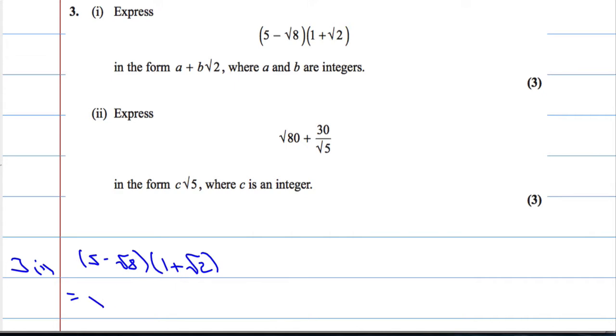So 5 times 1 is 5, 5 times √2 is 5√2, negative √8 times 1 is -√8, and negative √8 times positive √2 is going to be negative √16.